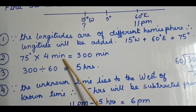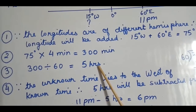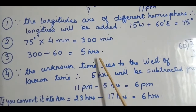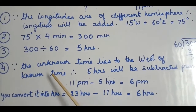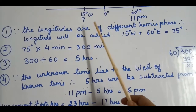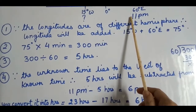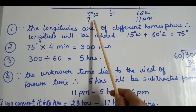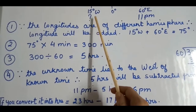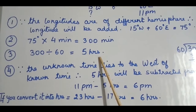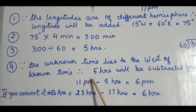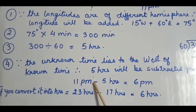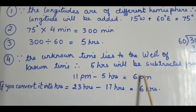The next step is the same: multiply by 4 to convert to minutes. The third step is to divide by 60 to get hours. Then, since the unknown time lies towards the west of the known time, we subtract. So 5 hours will be subtracted from 11 PM, giving 6 PM as the answer.